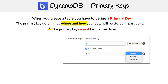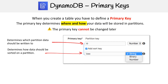Here is an example of the console where you create your primary key. You would define a partition key, which is going to determine which partition data should be written to. Then you have a sort key, which is optional, and this is how your data should be sorted on a partition.